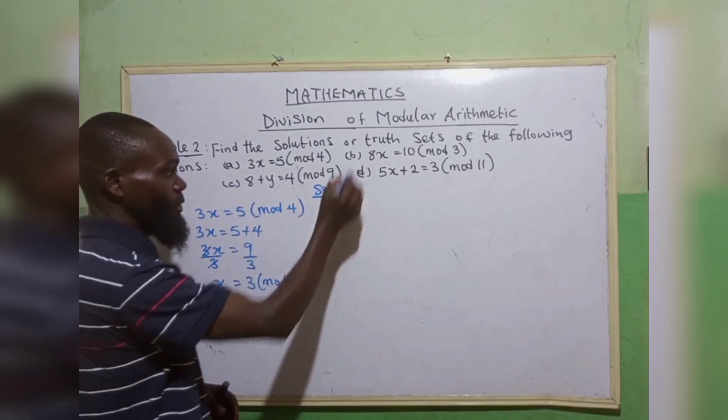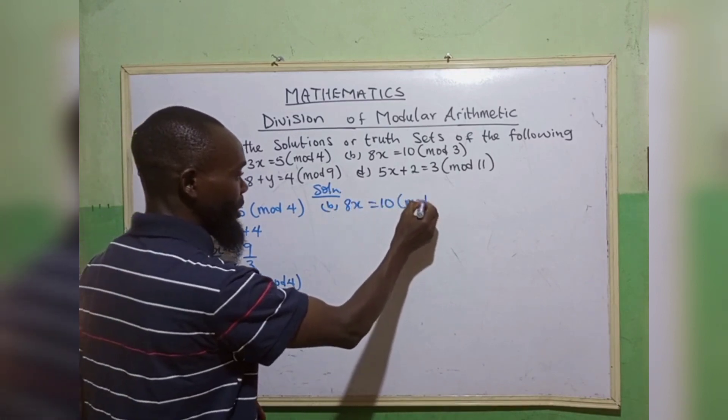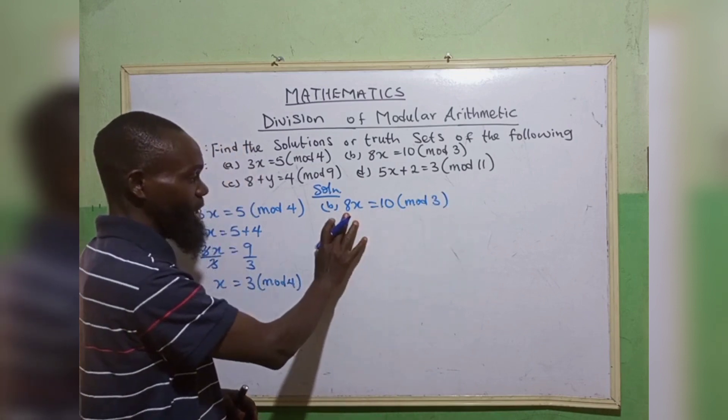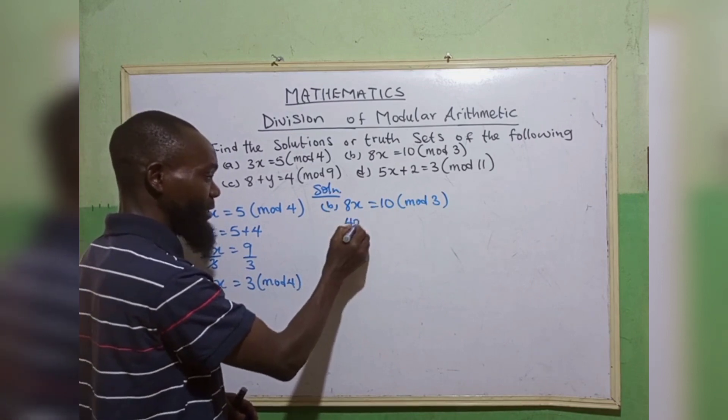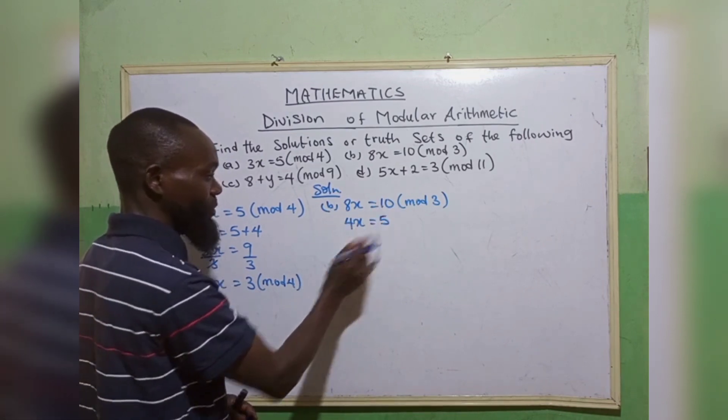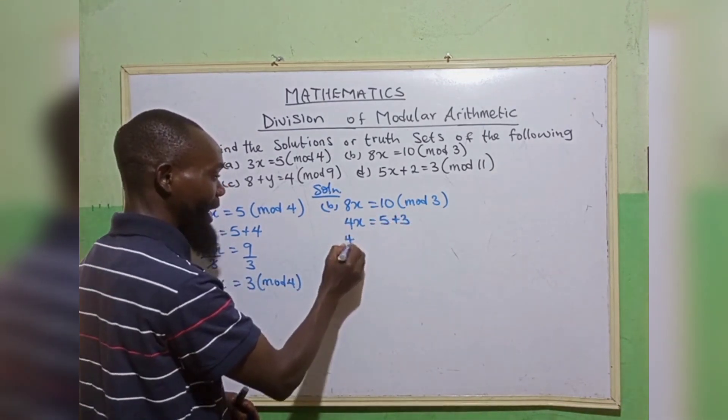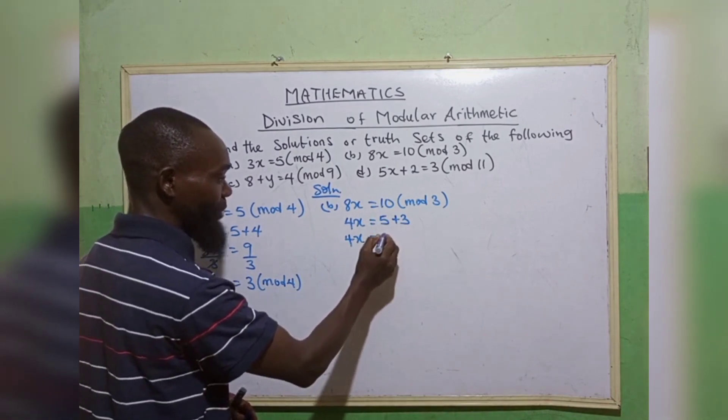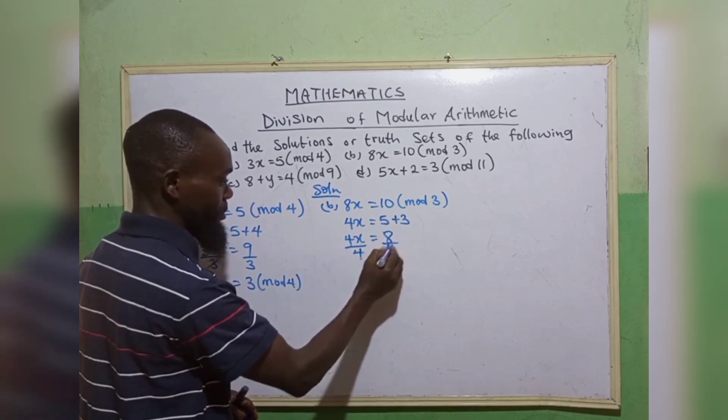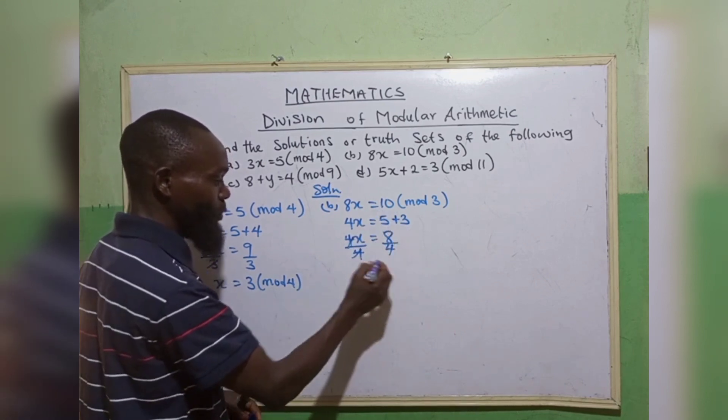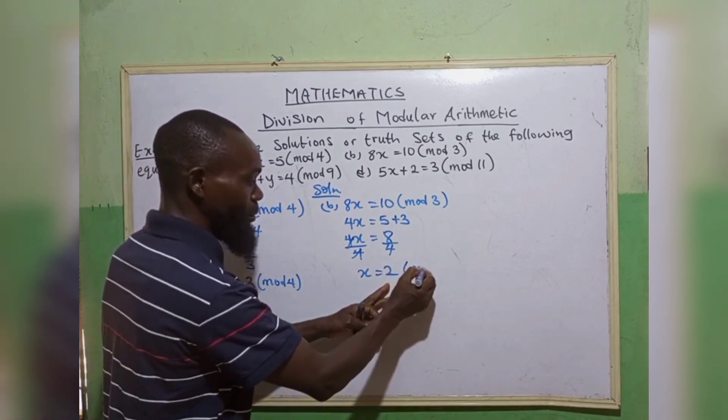Second equation, we have 8x is equal to 10 in mode 3. From here, 2 can go in 8 and 10. So 2 goes in 8, we have 4x. 2 goes in 10, we have 5. Now 4 cannot go in 5. Add your 3. So we have 4x is equal to 5 plus 3, we have 8. Now 4 can go in 8. So x equals to 2 in mode 3.